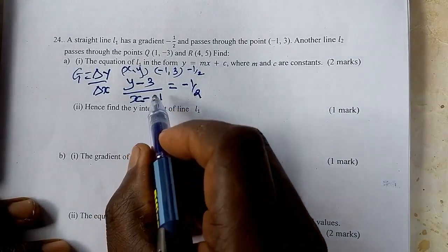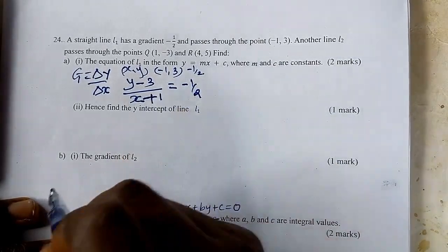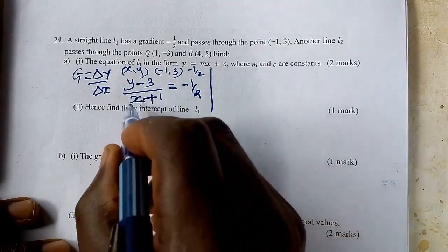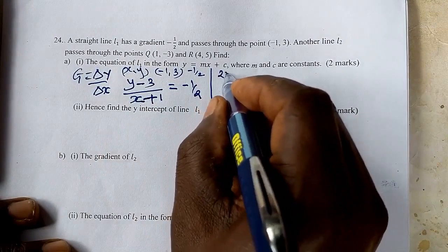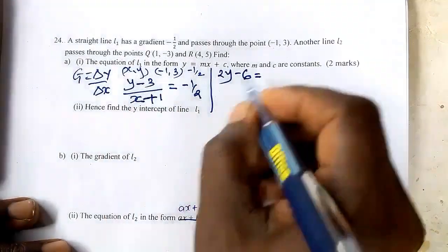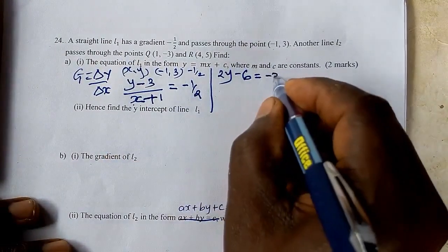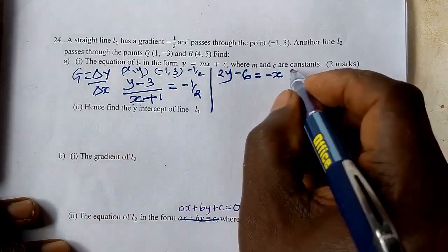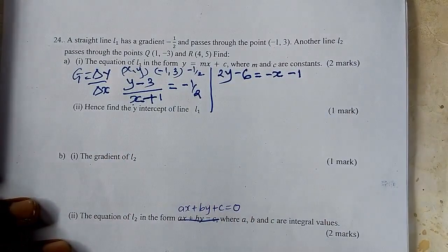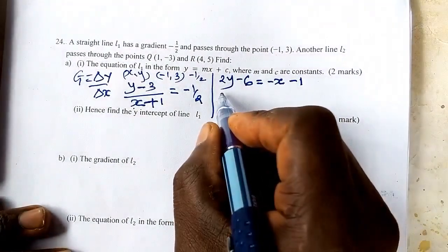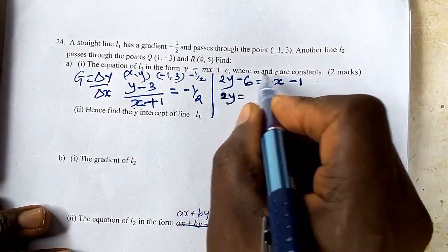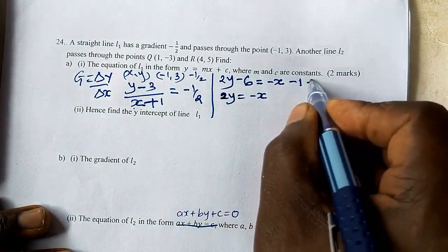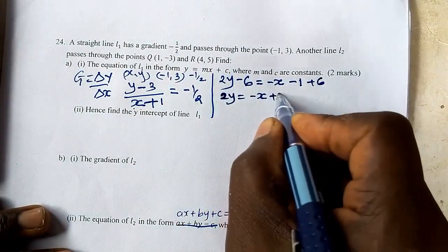The double negative becomes positive. So we cross-multiply to get: 2y minus 6 equals negative x minus 1. Then 2y equals negative x minus 1 plus 6, which simplifies. Negative 6 becomes negative 6, so the constant becomes negative 5... so this gives us plus 5.